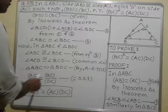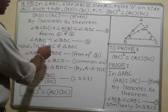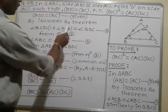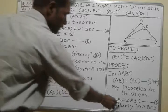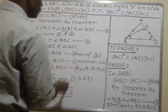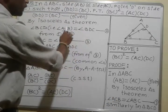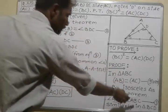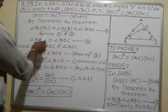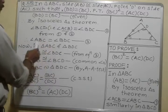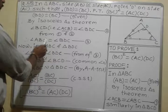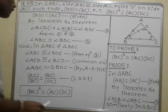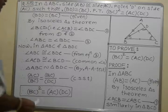From equations 1 and 2, the angle ACB appears on both left-hand sides and they are the same. Therefore the right-hand sides must also be equal. So from equations 1 and 2, angle ABC is equal to angle BDC. This is equation number 3.